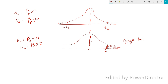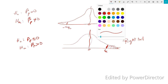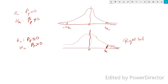We can also have a left-tail test, where we test on the left-hand side of the distribution. The critical value in this case is minus T alpha.